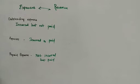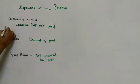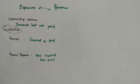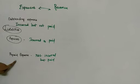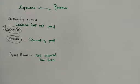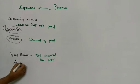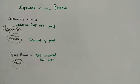Now, how do we classify these? Outstanding expense — the expense is incurred but not paid — so there is an obligation to pay. That obligation is a liability. Prepaid expense — I have paid in advance for a benefit I have not yet received — so advance payment is an asset. The prepaid expense is classified as an asset.